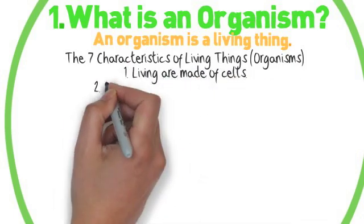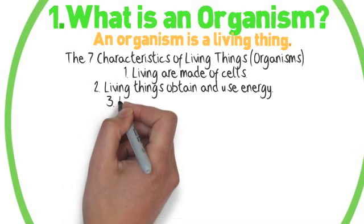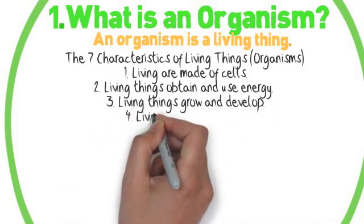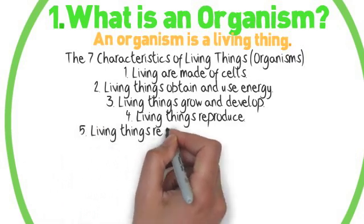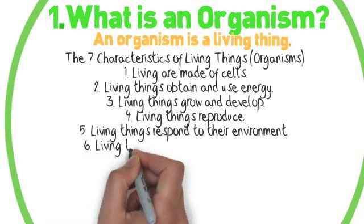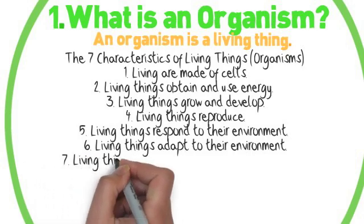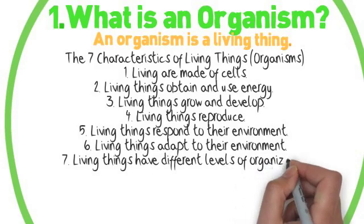So the first characteristic is that it's made up of cells. Number two, they obtain and use energy. Number three, things grow and develop. Number four, they reproduce. Number five, they respond to their environment. Number six, they adapt to their environment. And finally, they are organized at different levels. And that is what we will discuss today.